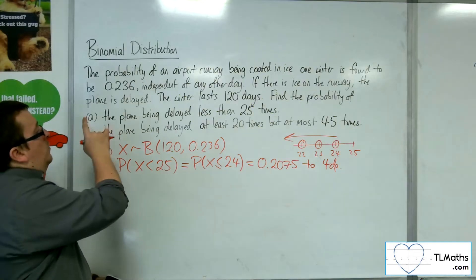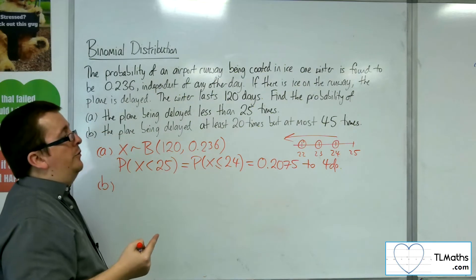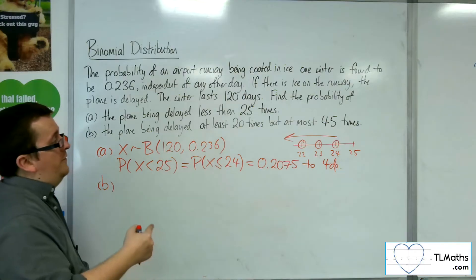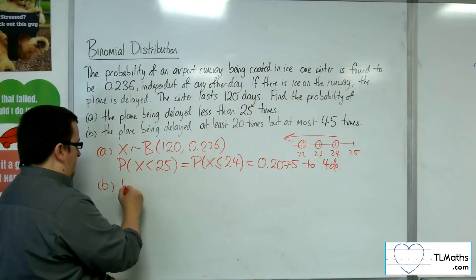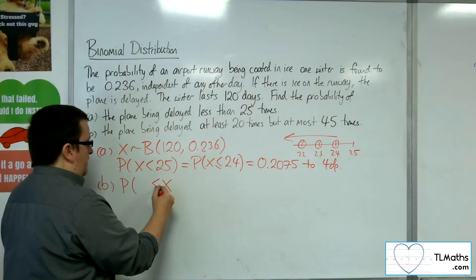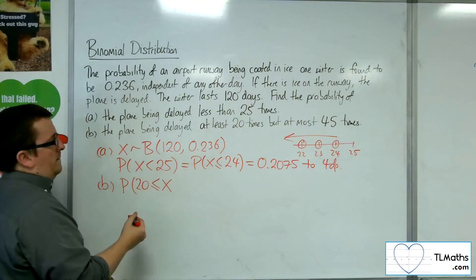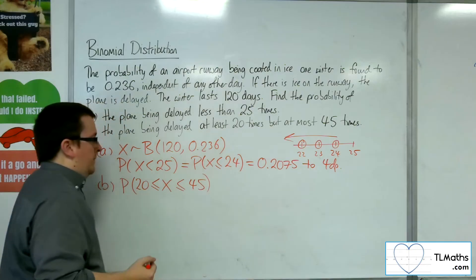Now for B, find the probability of the plane being delayed at least 20 times, but at most 45 times. Okay, so at least 20, so here's X, at least 20, so greater than or equal to 20, but at most 45.